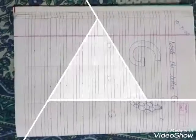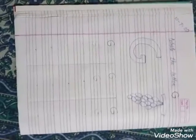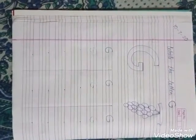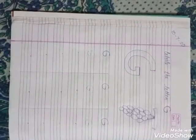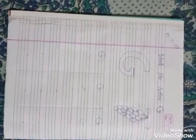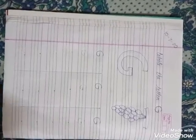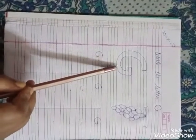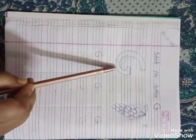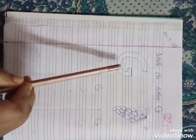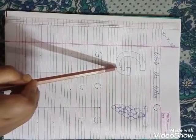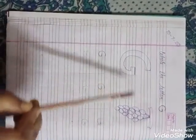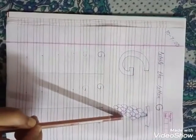Good morning children. Today we are going to learn about letter Z. Which letter is this? This is a Z. Z for Crabs.